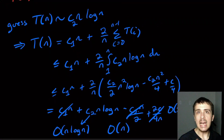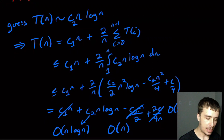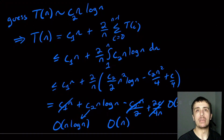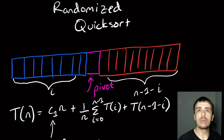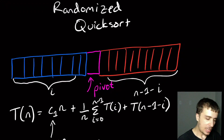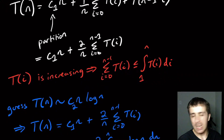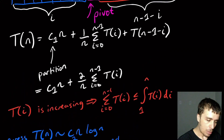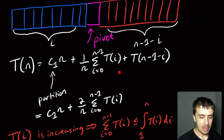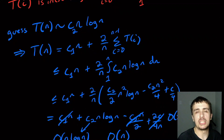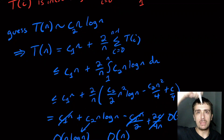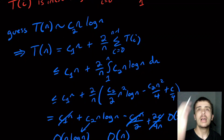By making that guess and verifying it, we confirmed that randomized quicksort runs in expected O(n log n) time — assuming smaller subproblems run in that time, the larger problem also runs in that runtime in expectation. We used the symmetry between the two T terms and a guess-and-check method, which is sometimes necessary for verifying runtimes. Hopefully that was interesting — leave thoughts about randomized quicksort in the comments, please like and subscribe, and thanks for watching.